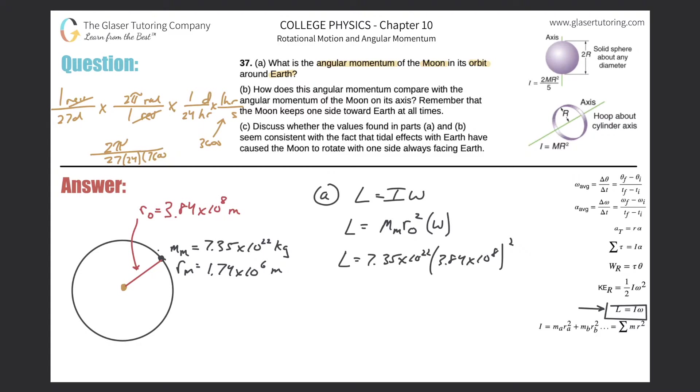So that's going to be 2 pi all over 27 times 24 times 3,600. And now all I need to do is calculate. So let's throw it on into the calculator. So 7.35 times 10 to the 22nd times 3.84 times 10 to the 8th, and that's squared multiplied by 2 pi, all divided then by 24 times 27 times 3,600. And what do we get? So we get about 2.92, 2.92 times 10 to the 34th. And the units here will be kilogram meter squared per second. Those are the units for angular momentum.